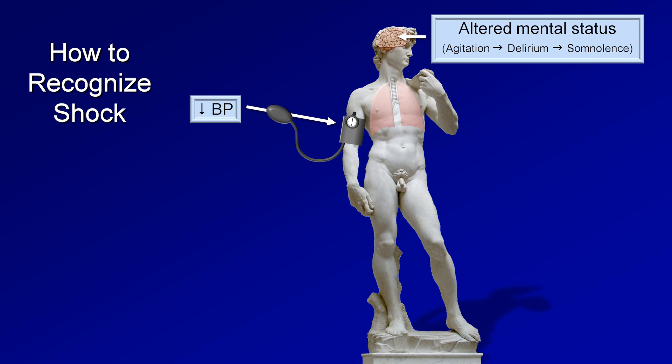In the respiratory system, almost all patients with shock have tachypnea, and many also have hypoxemia. This can be due to cardiogenic pulmonary edema — for example, in shock complicating a massive heart attack. It can also be due to non-cardiogenic pulmonary edema, such as ARDS complicating sepsis.